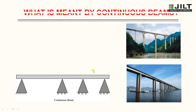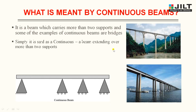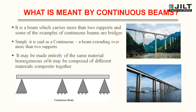Now let us move towards what is meant by a continuous beam. You can view the live images — if a beam is resting on more than two supports, it can be termed a continuous beam. Examples include bridges and flyovers. It is a beam which carries more than two supports. Simply stated, a continuous beam extends over more than two supports. It may be made entirely of the same material — homogeneous — or composed of different materials — composite.